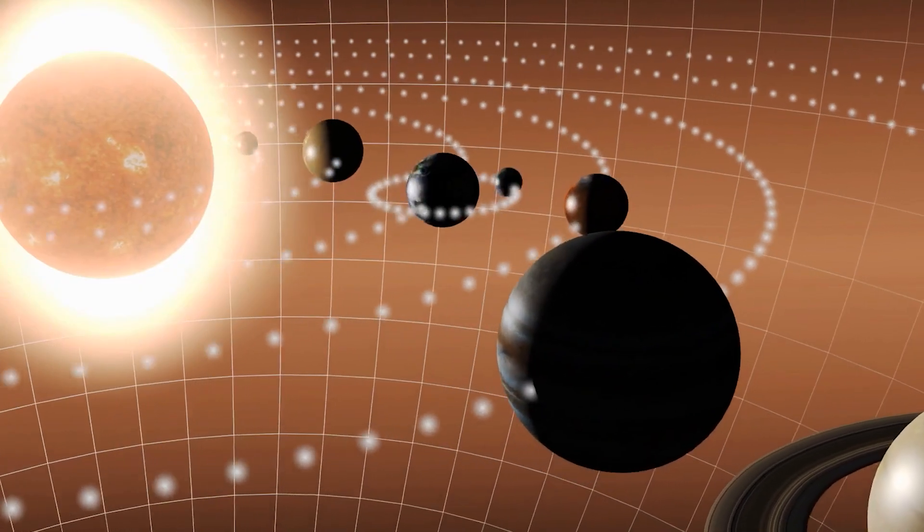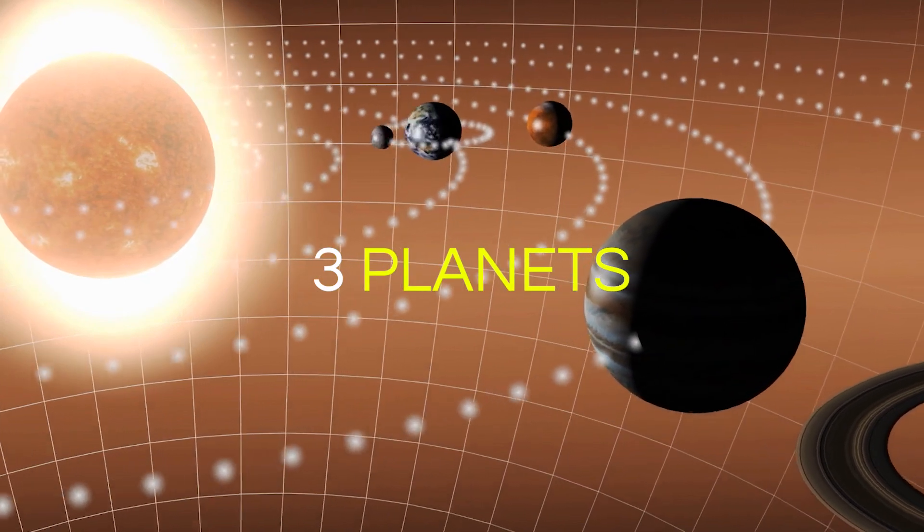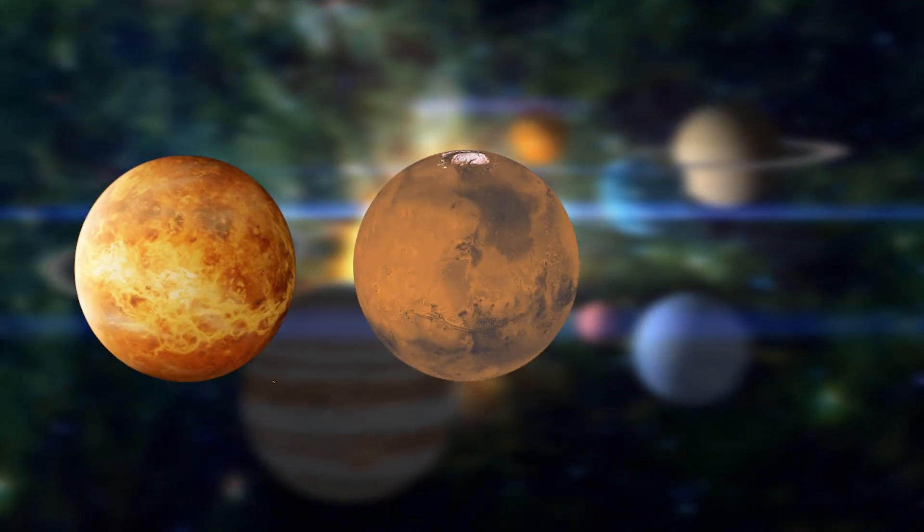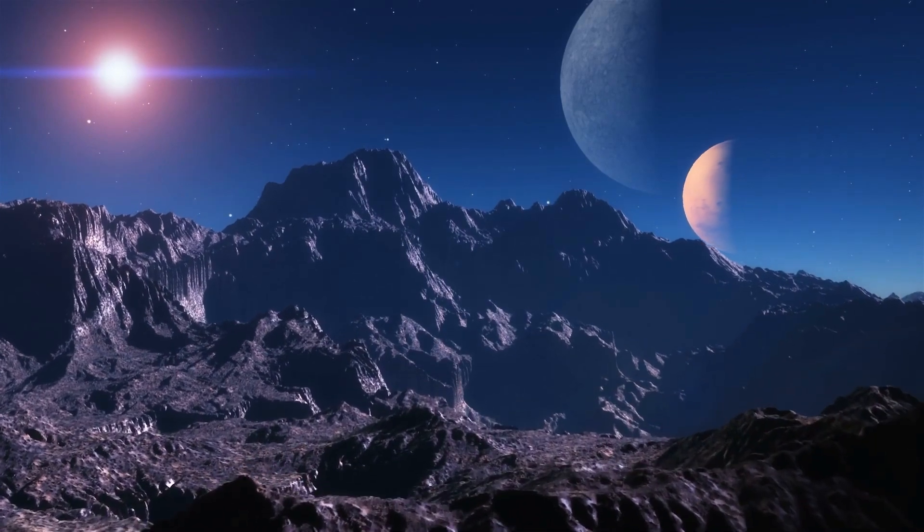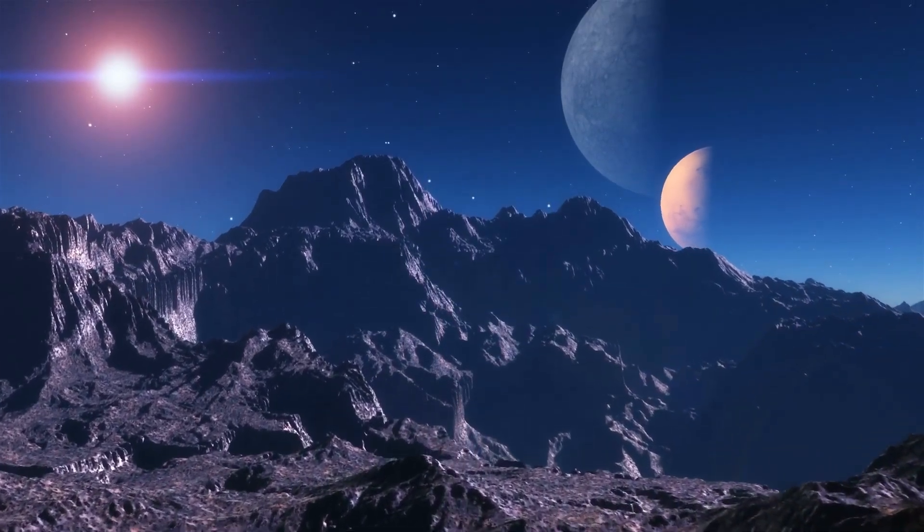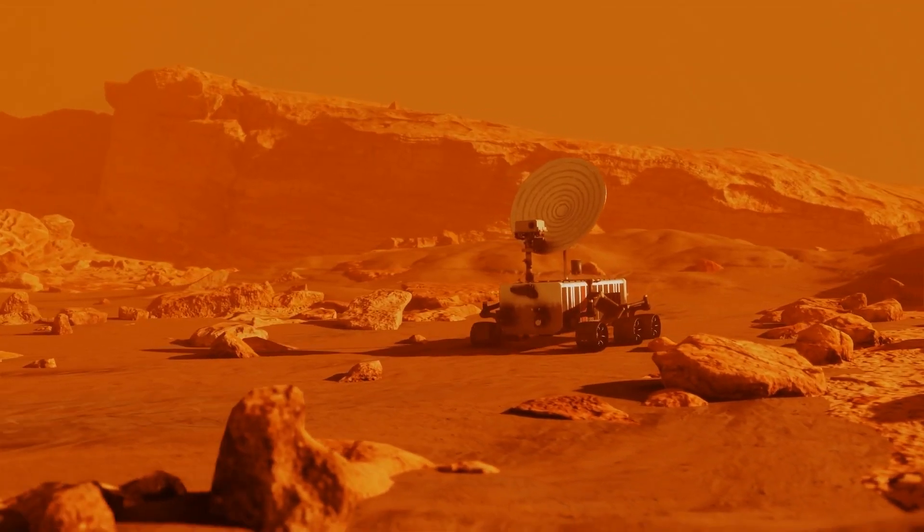In our own solar system, there are three planets in the habitable zone – Venus, Mars, and Earth. All of them are thought to have had water on their surface at some point, and we're still searching for signs of life on Mars.